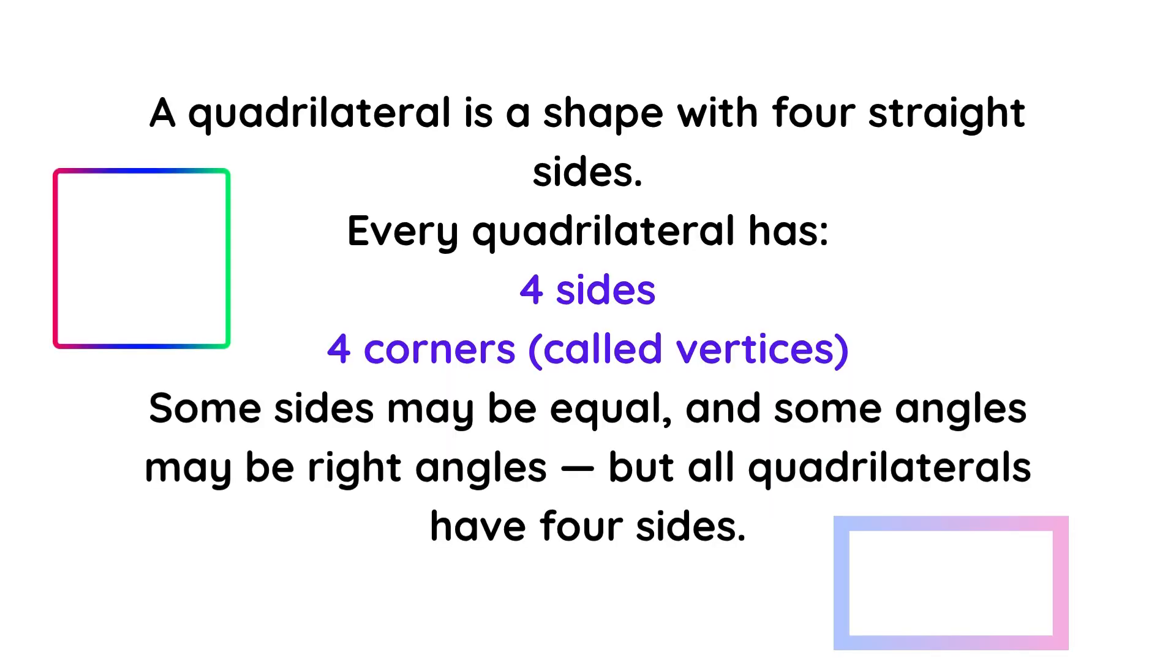A quadrilateral is a shape with four straight sides. Every quadrilateral has four sides and four corners called vertices. Some sides may be equal and some angles may be right angles, but all quadrilaterals have four sides.